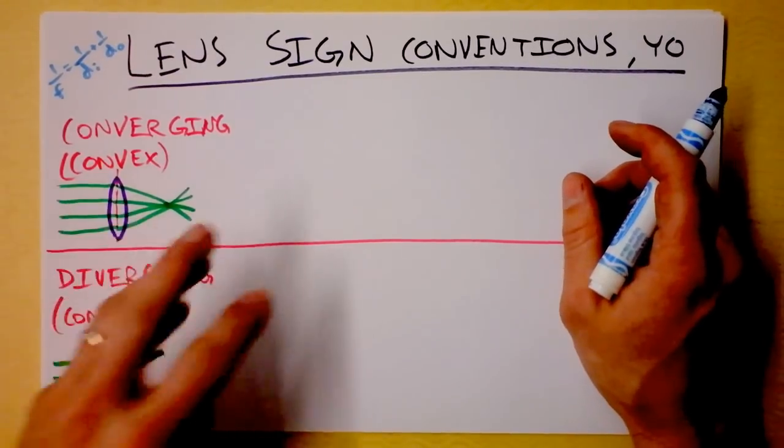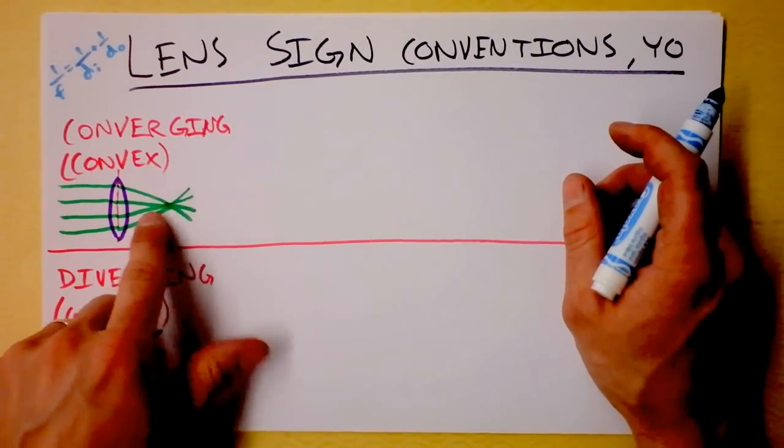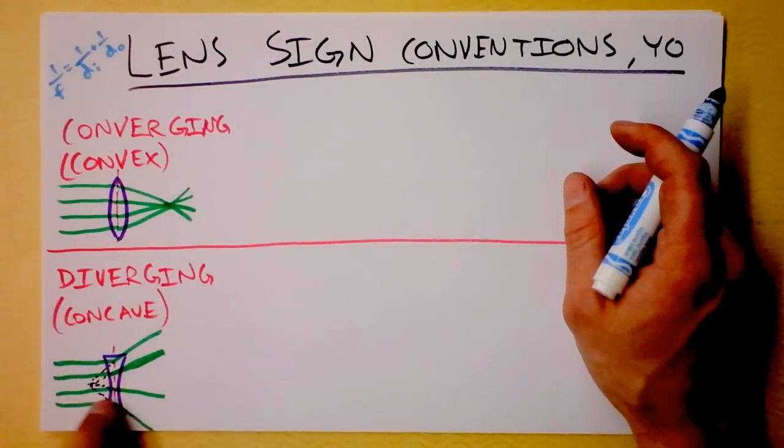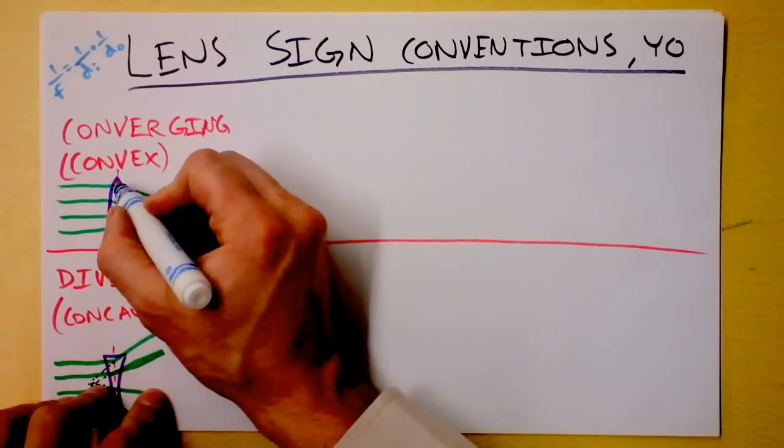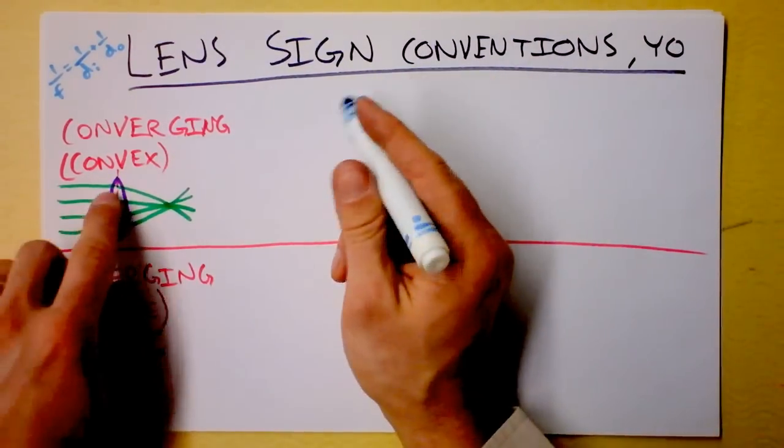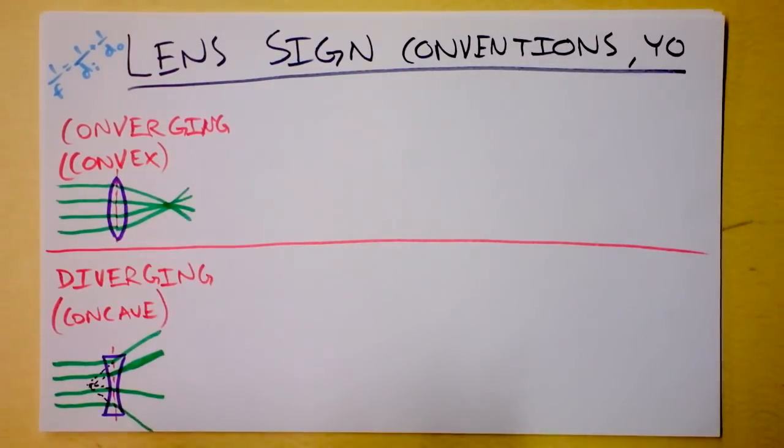And so I suggest before you start any lens problem, you draw yourself a picture of a converging lens to remind yourself how the rays look when they go through and a diverging lens. Same thing. Of course, the rays are bending at the surfaces, but we draw them as if they're happening at the line of action so that we can get our pictures right.